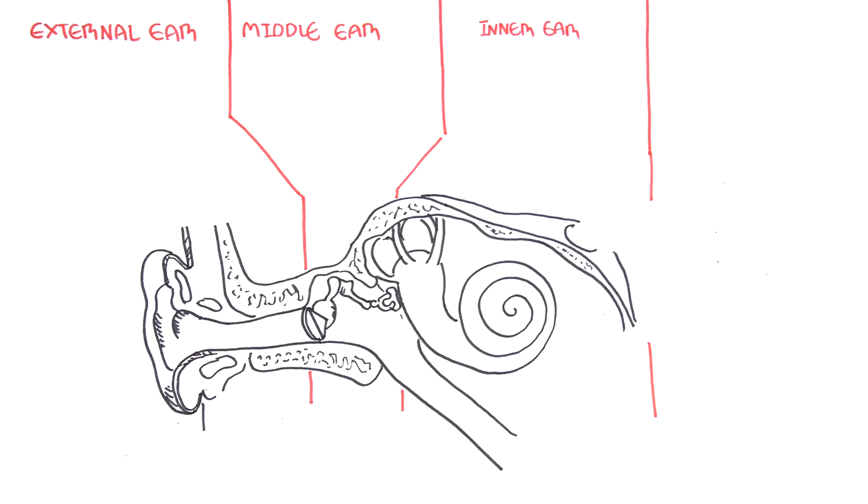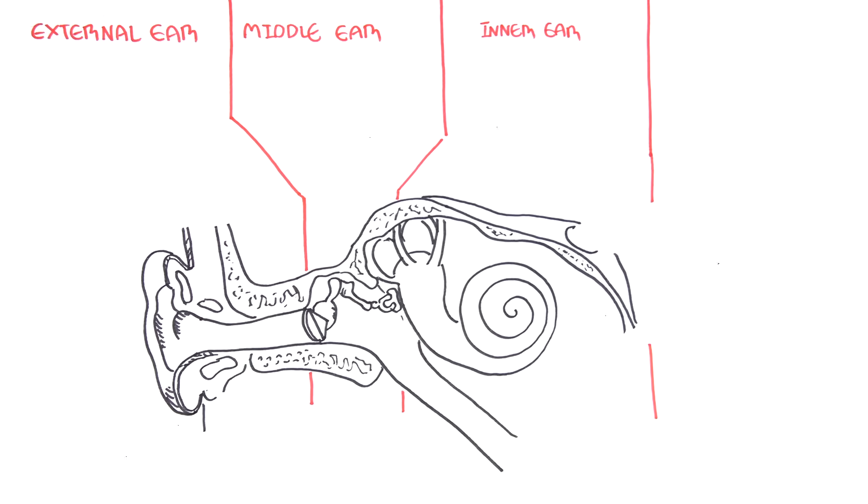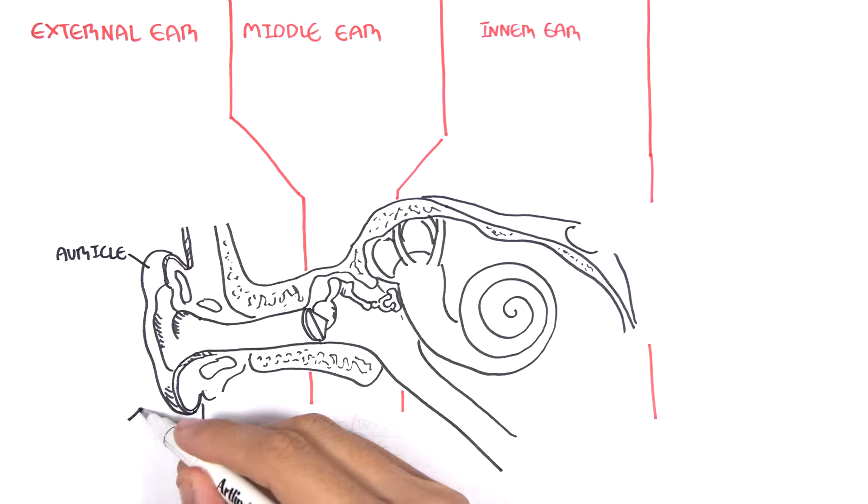So let us first look at the external ear. The external ear is composed of the outer auricle and the external acoustic meatus.